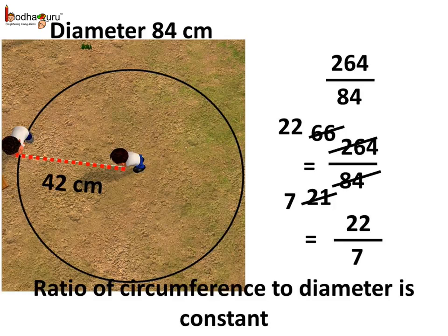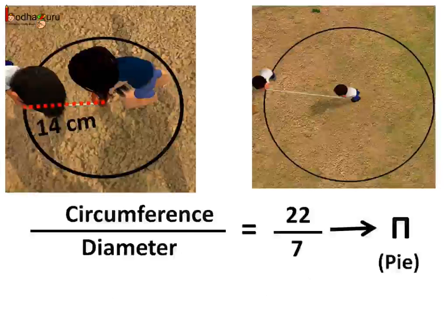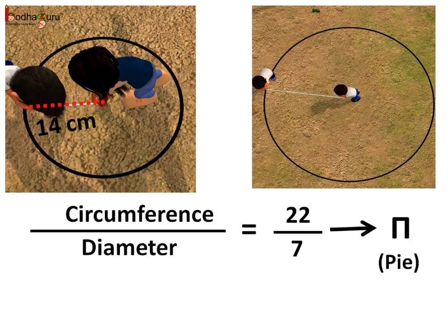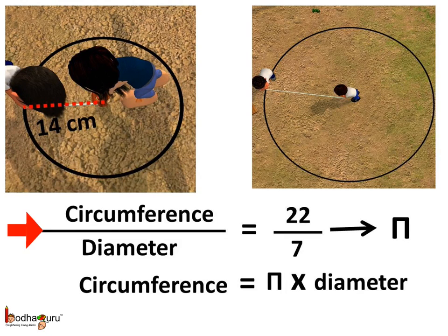So we see, roughly the circumference is 3 times the diameter. The ratio of circumference and the diameter of a circle is always 22 by 7, and this ratio is the same for all circles. This ratio is represented by the Greek letter pi. So the circumference of a circle is 22 by 7 multiplied by its diameter — that is, circumference equals pi multiplied by d, where d is the diameter.